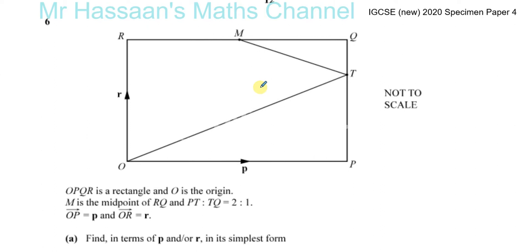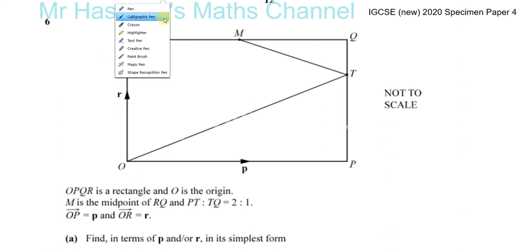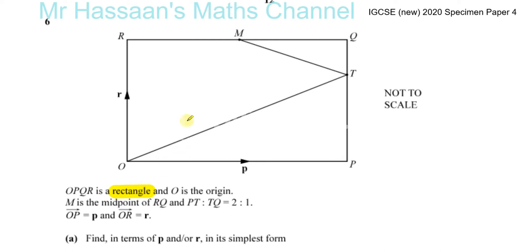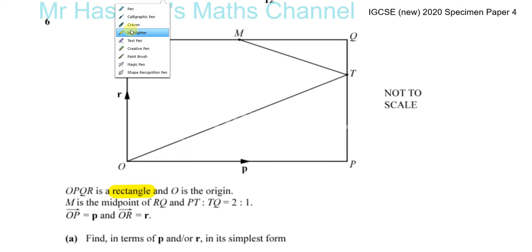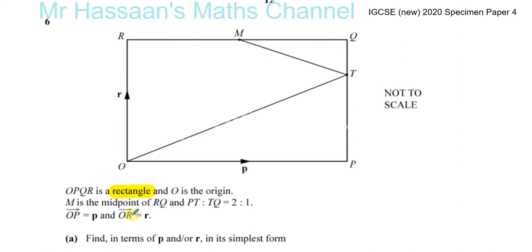Here we're told about a rectangle OPQR. We know it's a rectangle, so the properties of a rectangle will come into play. From that one statement we know that OR and PQ are parallel lines, and OP and RQ are parallel lines. OR is equal to PQ, and OP is equal to RQ. In vectors, those kinds of pieces of information are very important.